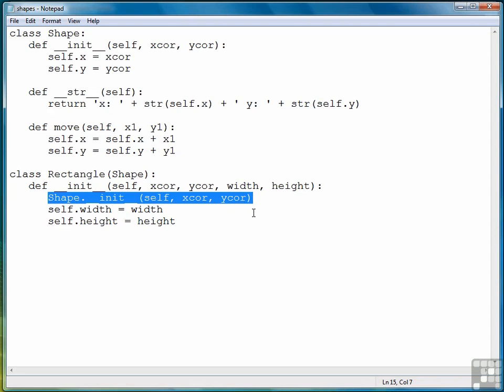But again, part of the idea behind inheritance is to not have to rewrite code that's already there. And because Rectangle inherits from Shape, we should be able to use this constructor as is without having to change it, and then just add in the pieces that we need for the width and the height.